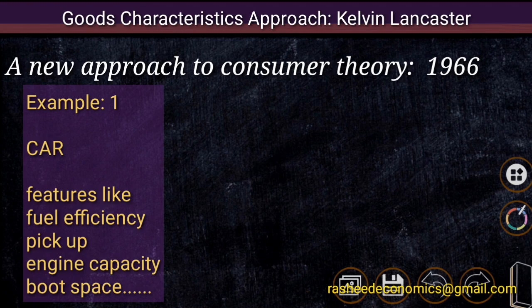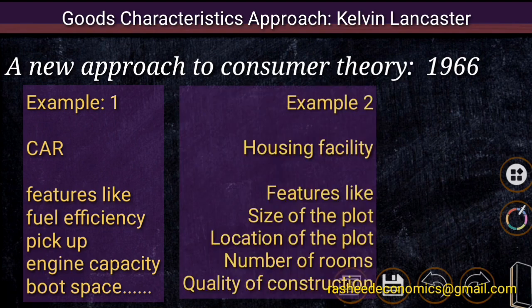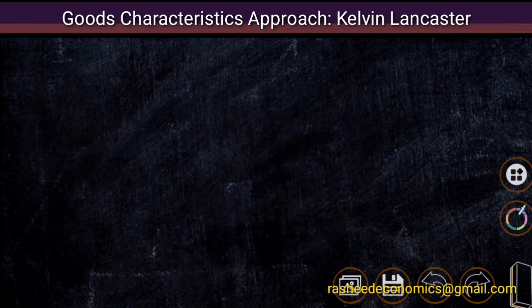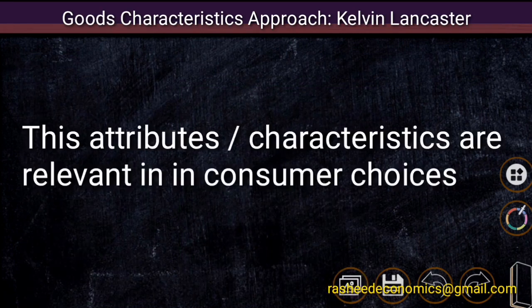Similarly, if a consumer is selecting a housing unit, he may give preference to attributes such as the size of the plot, the location of the plot, number of rooms, quality of construction, provisions for parking, materials used for construction, and available space within the housing facility. All these are major attributes a consumer may look into. Therefore, Lancaster argued that these attributes or characteristics are relevant in consumer choices, and it is necessary to incorporate these characteristic features into the theory of demand.